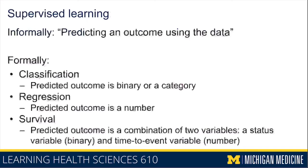Finally, survival outcomes refer to a combination of two variables: a binary status variable and a time-to-event variable. These are commonly used to try to predict or distinguish between patients who are going to have an event in the near future versus individuals who will have that event much later, or individuals who aren't going to have that event at all.